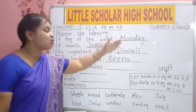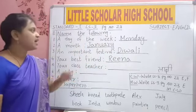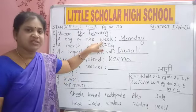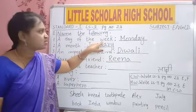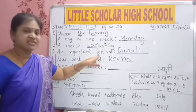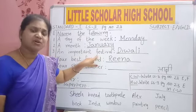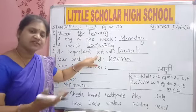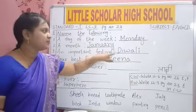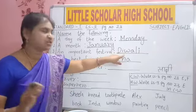Why do all these start with capital? Because all these names are special names. Week — we did not write 'week' with capital because week is common. Festival — we did not write 'festival' with capital because all festivals are known as festivals. So festival is common, but if you say 'Diwali festival', then Diwali is special.